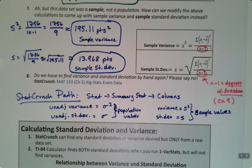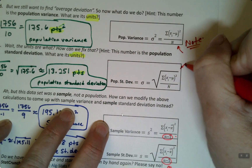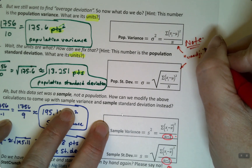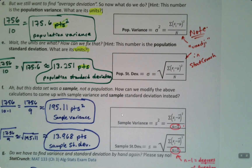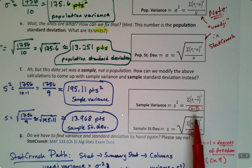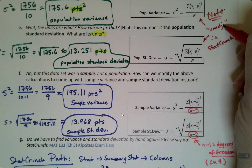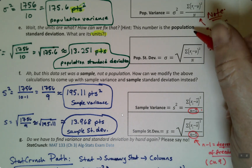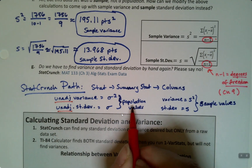Note: these values are labeled 'unadjusted' in StatCrunch. That's actually what degrees of freedom is — it's adjusting for the fact that it's a sample. The n minus one is making an adjustment, so 'unadjusted' means no adjustment has been made. The unadjusted values in StatCrunch are sigma² and sigma — those are the population values.